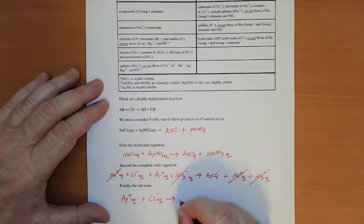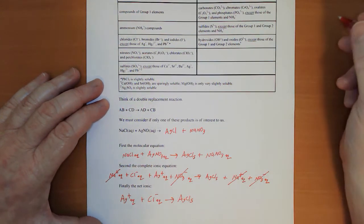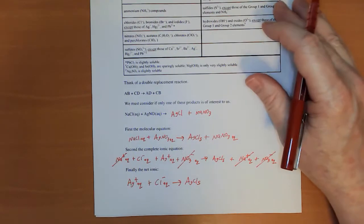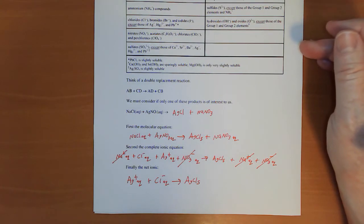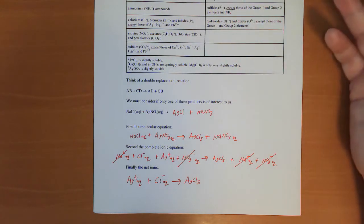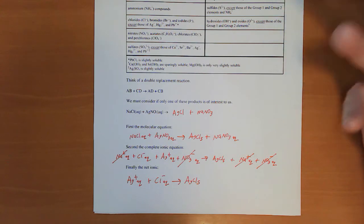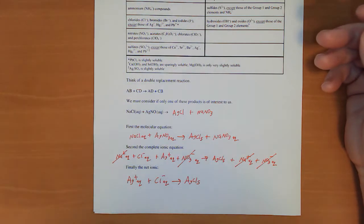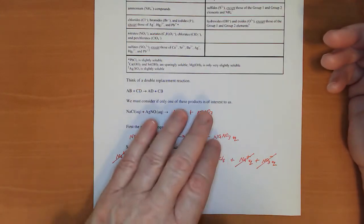Which would be the net ionic equation. Most people are pretty good at net ionic equations for precipitation reactions, but they also happen in acid base and redox, so we need to practice them across the board. That's the end of page nine, let's move over to page number ten.